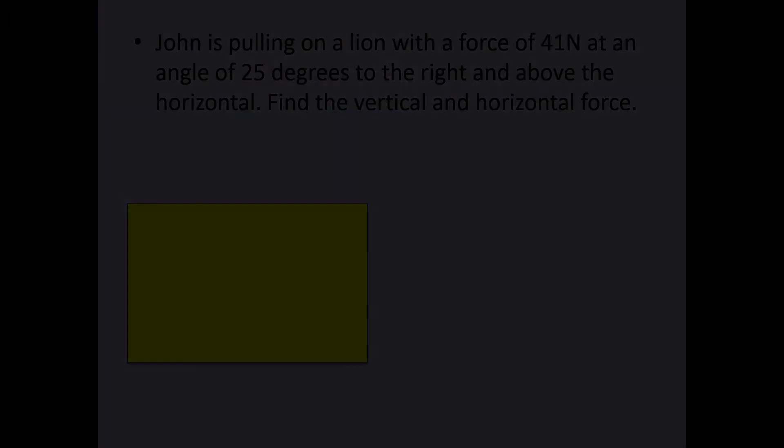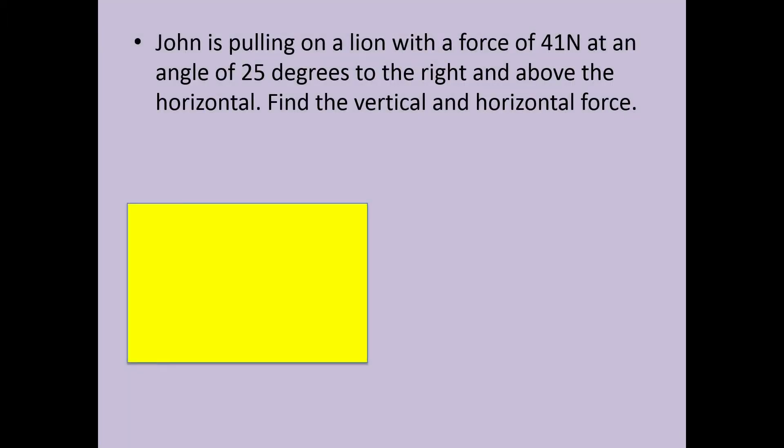Let's do a quick example. John is pulling on a lion with a force of 41 N at an angle of 25 degrees to the right and above the horizontal. Find the vertical and horizontal force.